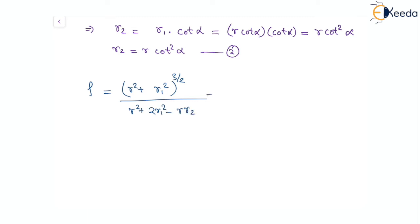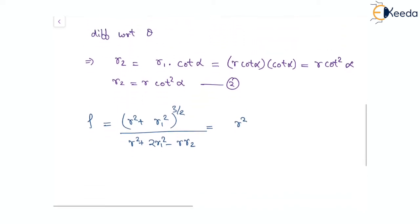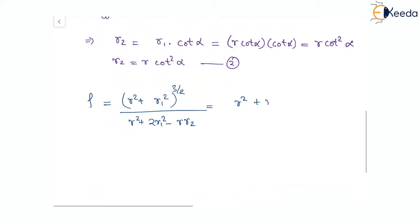Putting these values, this is r squared plus r squared cot squared alpha to the power of three-halves, divided by r squared plus 2r squared cot squared alpha minus r times r squared cot squared alpha.